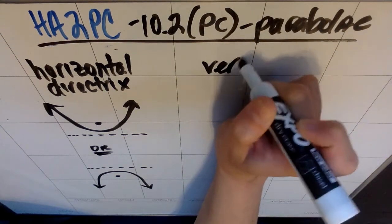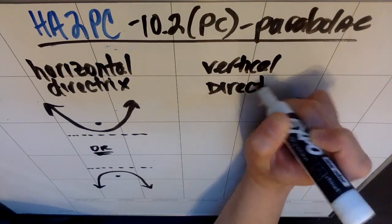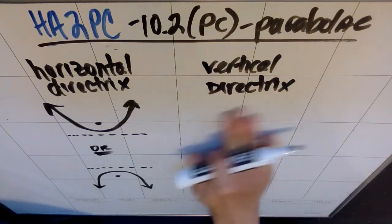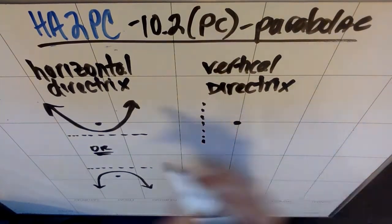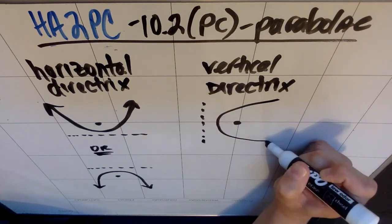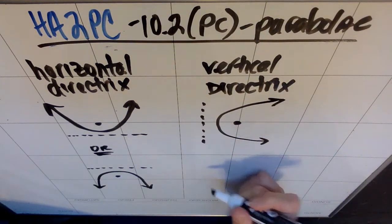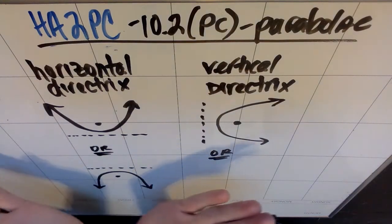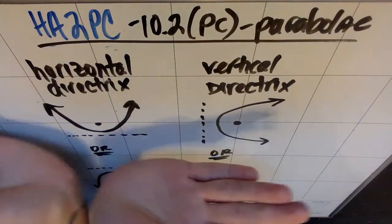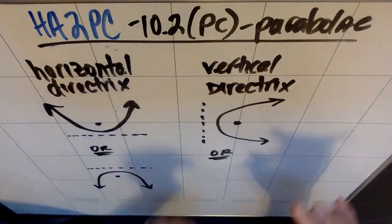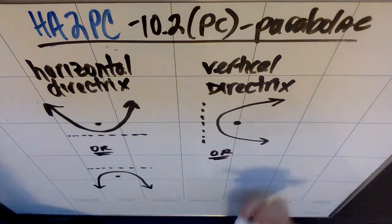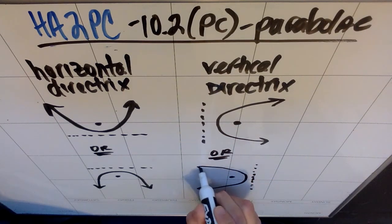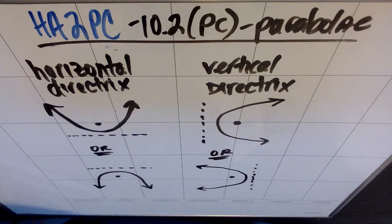If I instead have a vertical line as my directrix — which we hadn't talked about yet — you can have parabolas that go sideways, they're just not functions. With a vertical directrix and the focus to the right, the graph bends to the right. One way to think about it: the graph bends around your focus, like it's magnetically pulled toward it. The graph bends away from the directrix and toward the focus. If the focus is on the left, the graph bends left.